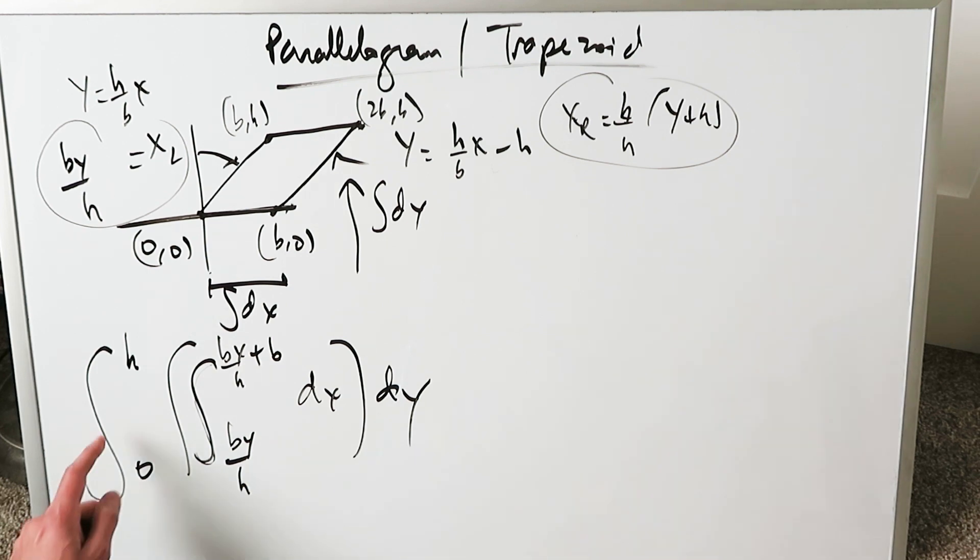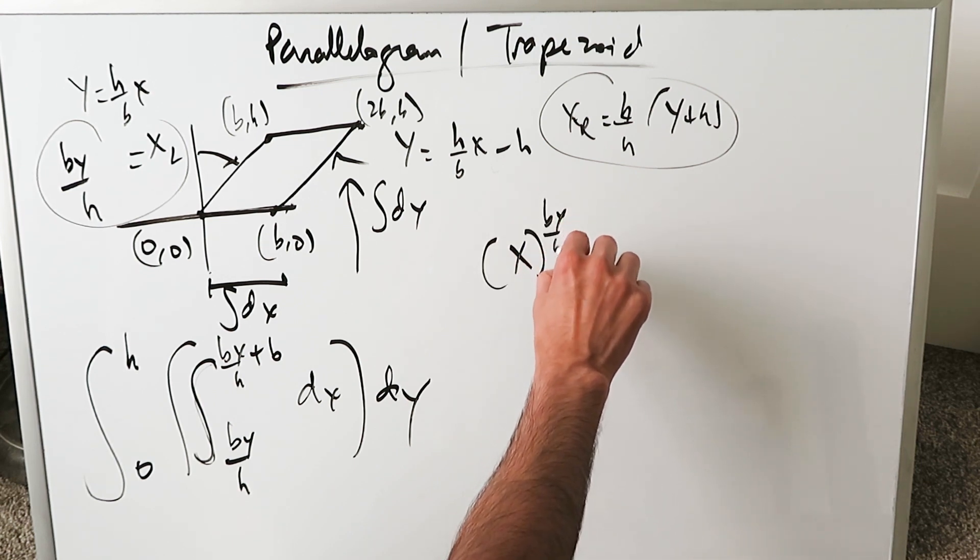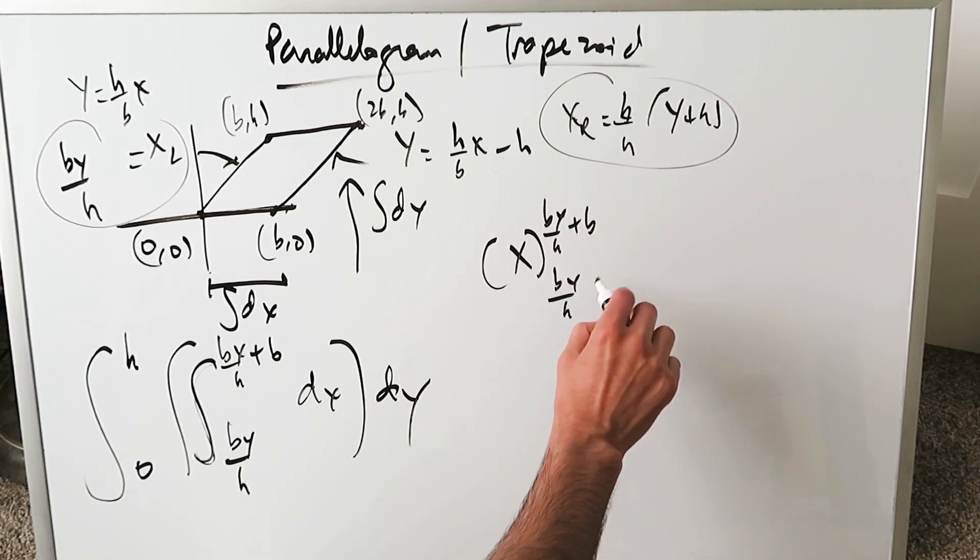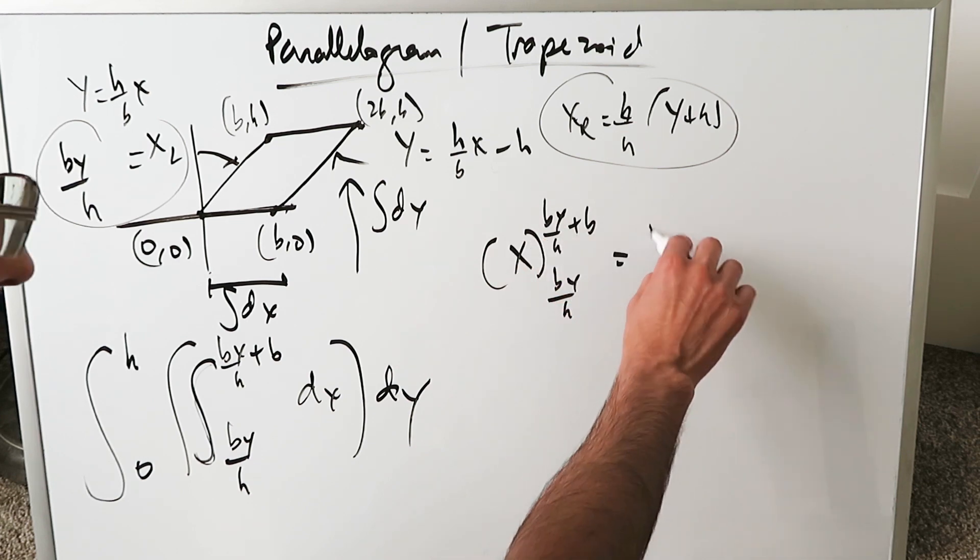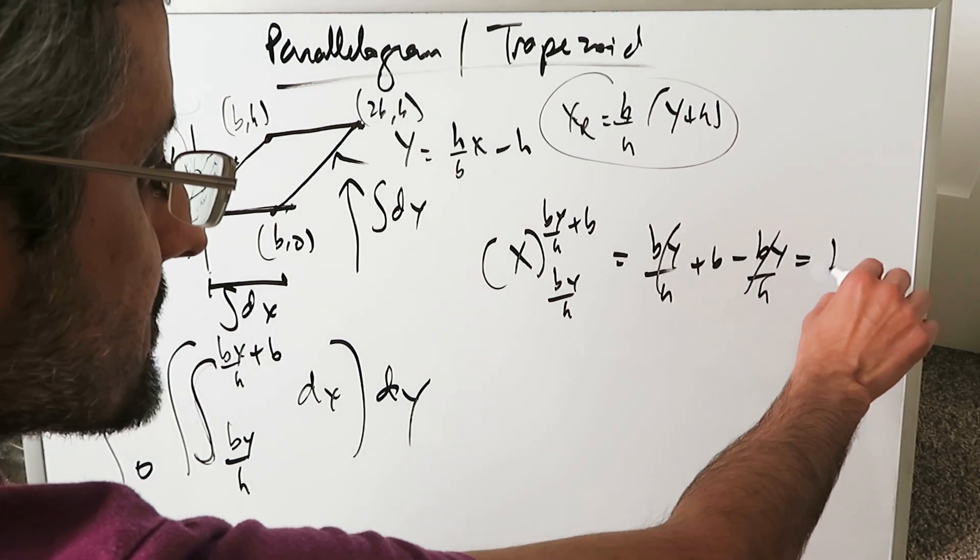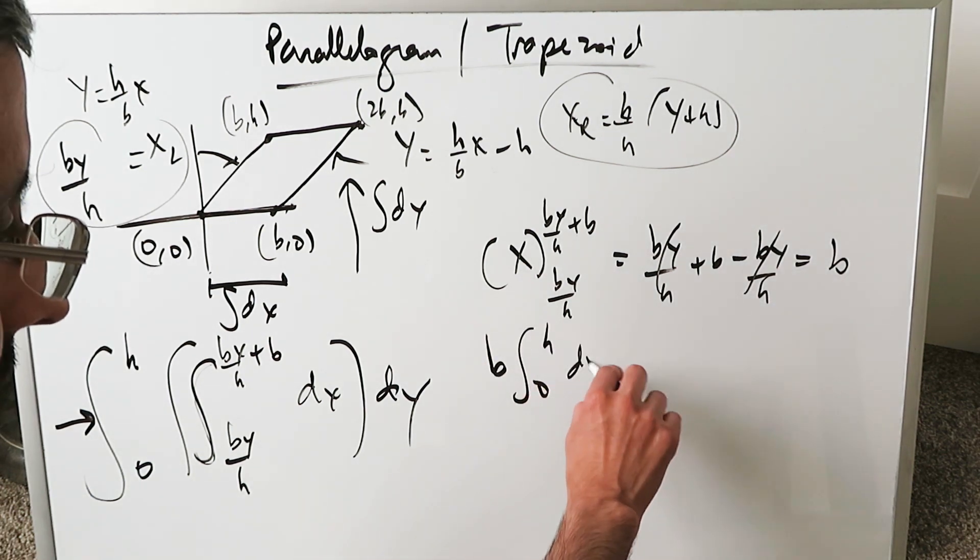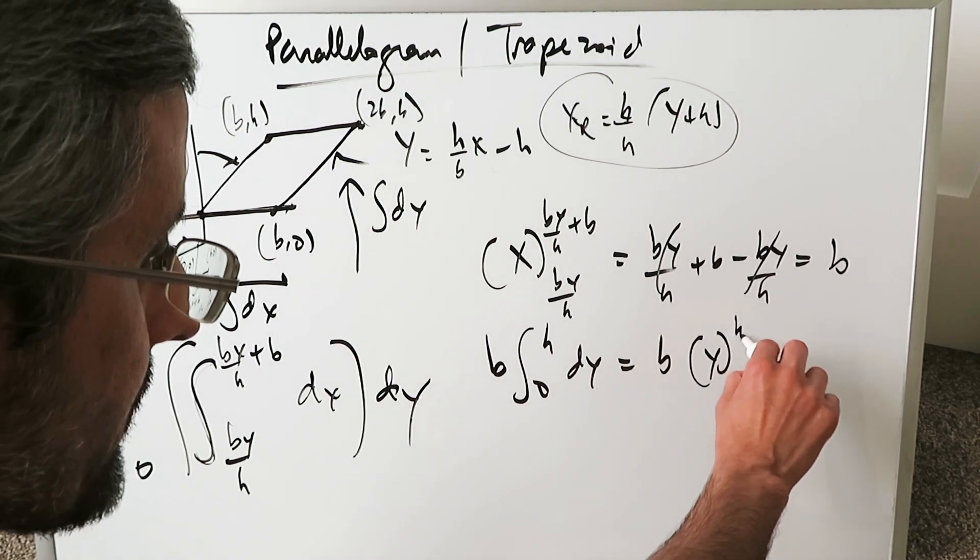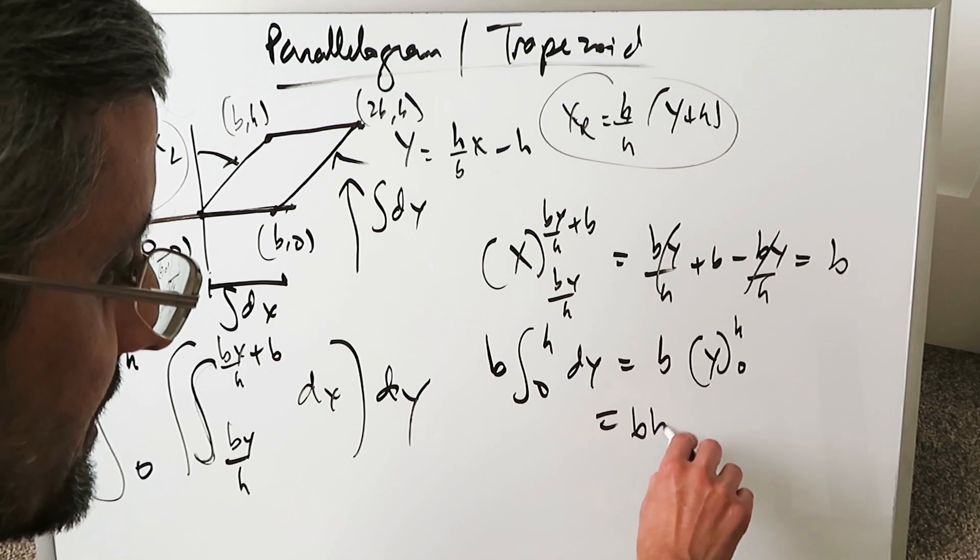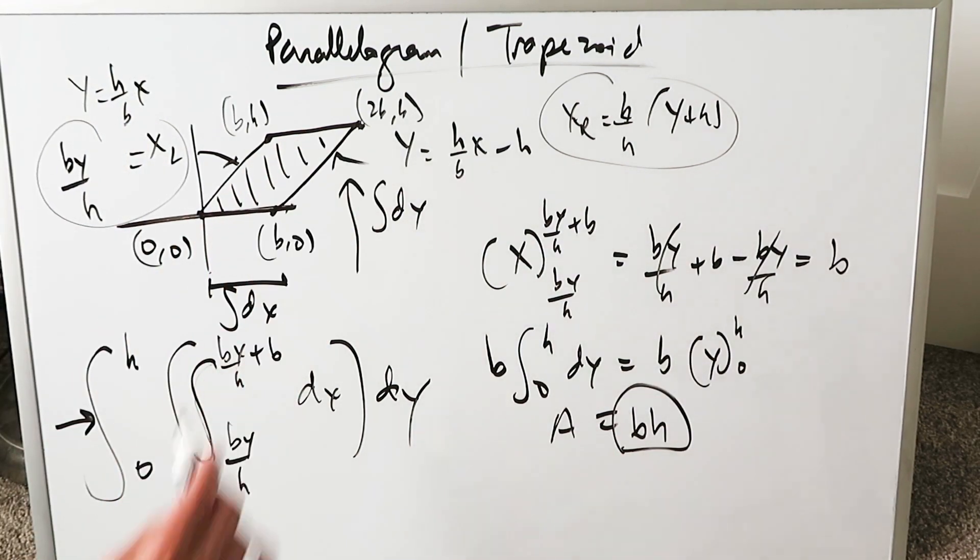This gives you everything for the parallelogram area formula. The anti-derivative is x evaluated at by/h + b and by/h. You have (by/h + b) - (by/h). These cancel out. The only thing remaining is b, which becomes a coefficient for the next integral: b times the integral from 0 to h dy. The anti-derivative is y, upper limit h, lower 0. You get bh, which is the area of this parallelogram, and it makes sense.